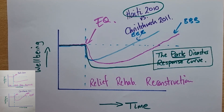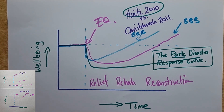For exam success, we try to link the theory — in this case the Park Disaster Response Curve — to real-world examples like Haiti and Christchurch. This will show off our analytical skills and impress the examiner.